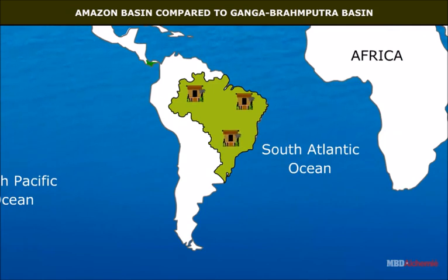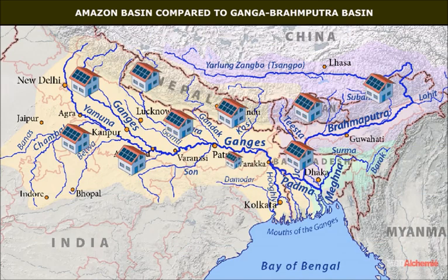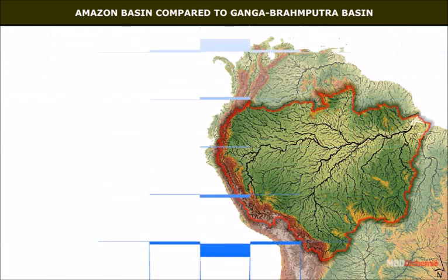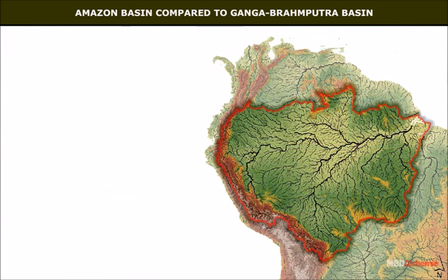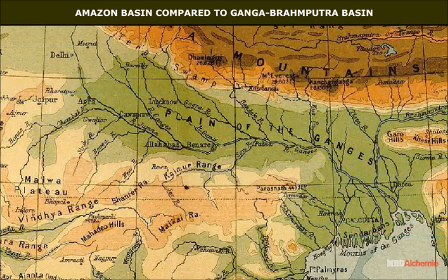Indigenous people still live in the Amazon valley. The Ganga-Brahmaputra plain is the cradle of one of the oldest civilizations in the world. Rivers have made both regions fertile. The topography of the plains has attracted people to both places — the Amazon only recently, and the Ganga-Brahmaputra plains since the dawn of history.